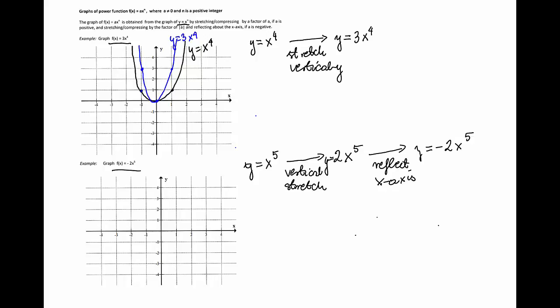So let's start with x to the fifth. The points (negative 1, negative 1), (0, 0), and (1, 1) are on the graph. For x = negative 2, the value is negative 32, which is way below the visible area. The graph looks like the graph of the cube function. This is y = x to the fifth.